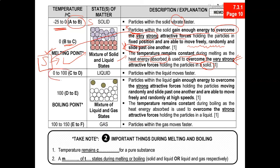From zero degrees to 100 degrees Celsius, the substance is in a liquid state. Since the particles are in a liquid state, they can only slide around one another, but they will do so faster because now they have more energy. When we continue to heat the substance and reach the boiling point at 100 degrees Celsius, for water, the substance is boiling.